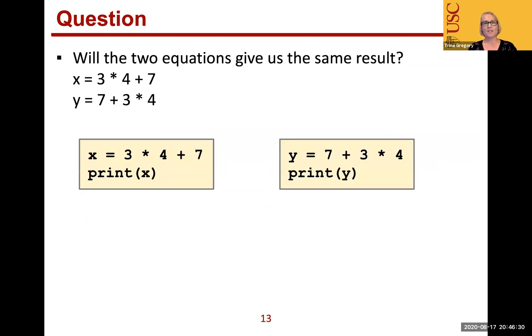Okay. So here's a question for you. Will the two equations give us the same result? X equals 3 times 4 plus 7. And Y equals 7 plus 3 times 4. So will they give us the same results? Hopefully you're thinking back to what you learned in algebra long ago. Yes. It will give us the same. But why?